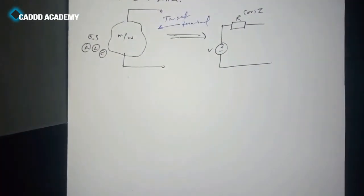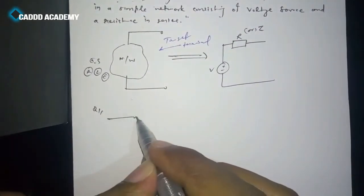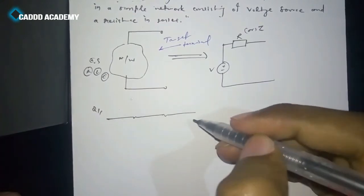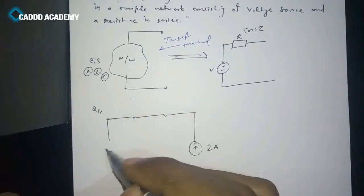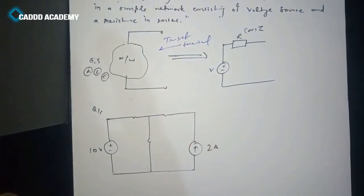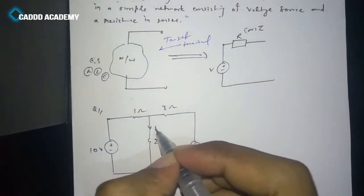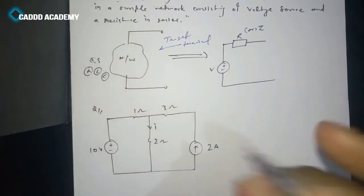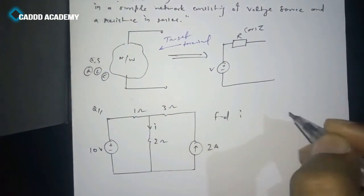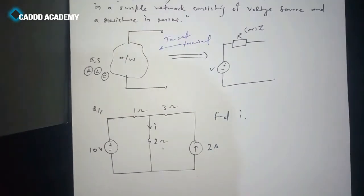Let's take a question for better understanding. We have a circuit and we have to find the current in this branch. You can solve this by KCL or KVL also, but by Thevenin's theorem it's going to be different — and the answer will be the same.